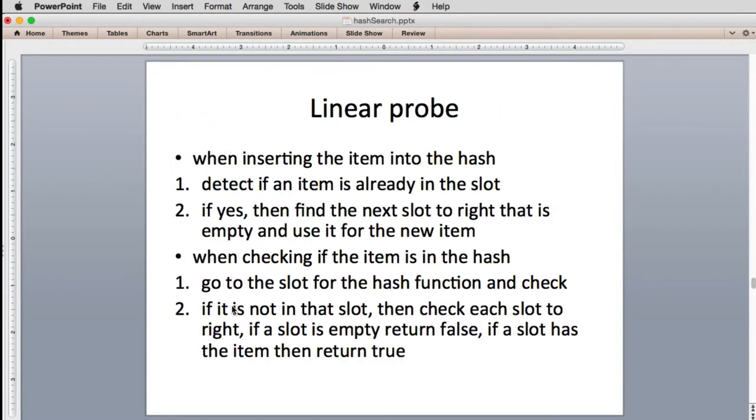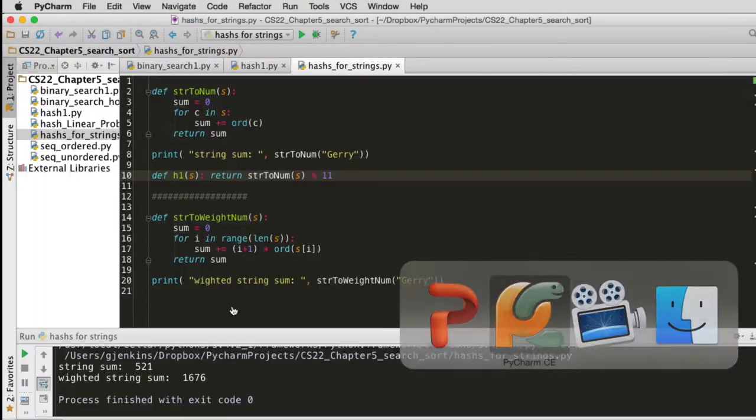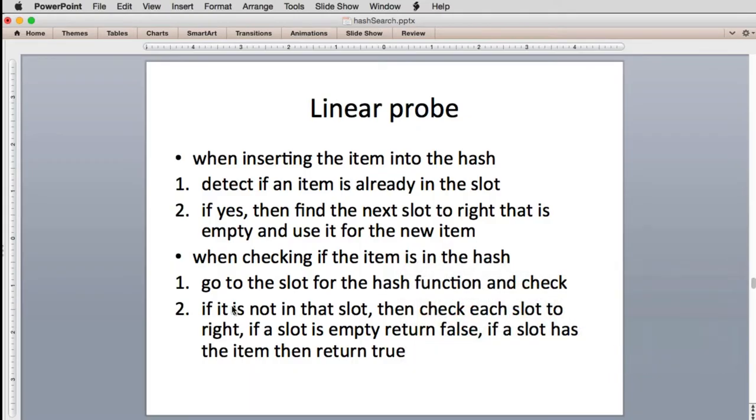So first, what is linear probing? We showed you the collision that happens where the 22 and the 77 try to pick the same slot. So when you insert an item in the hash, first you have to detect that there's already something in the slot. So we have to add a little test that before we put something in the slot, we check if it's there. If it is, in linear probing, you just add one to your slot number and go to the slot to the right and see, is that empty? And if it is, you use it.